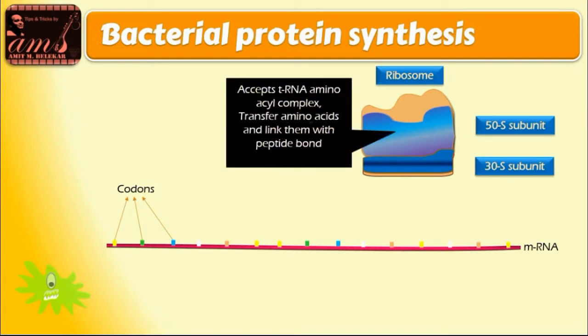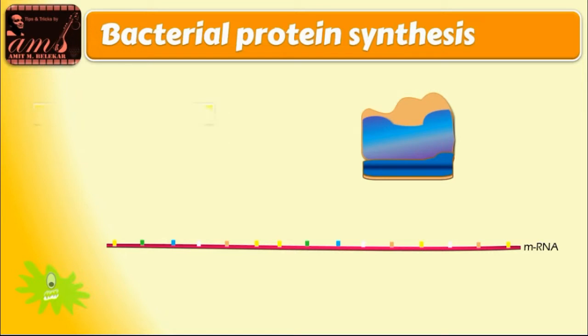Thus, the 50S subunit is responsible for accepting tRNA amino acid complex, transferring amino acids, and linking them with the help of peptide bonds. Then the ribosome binds with one end of mRNA.